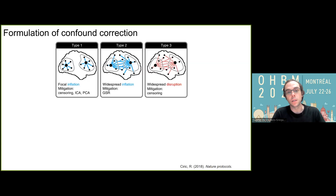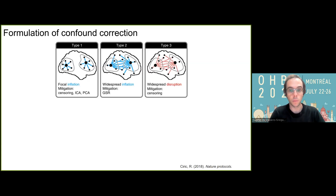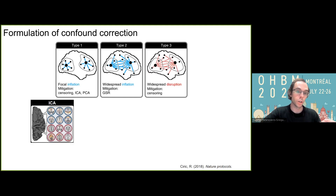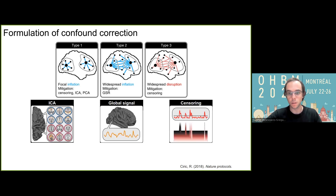In the world of fMRI, it is notoriously difficult to account for all the potential set of confounds that can impact connectivity analysis. In this review by a colleague, they argue that there are three essential types of corrections that must be applied. The first ones account for local inflations in signal, and techniques such as ICA can mitigate those. There are also global signal fluctuations, where the global signal must be regressed. Finally, certain frames must be censored when there's widespread disruption of the signal, since these frames cannot be effectively recovered.